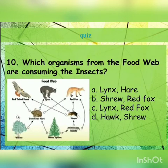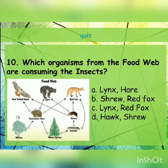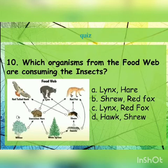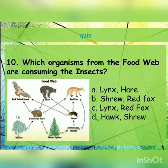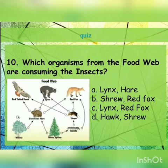Next question: which organisms from the food web are consuming the insect? Look at how many arrows are coming out from the insect. The first arrow coming out from the insect goes towards shrew, and the second arrow goes towards red fox. So the answer is option B: shrew and red fox.